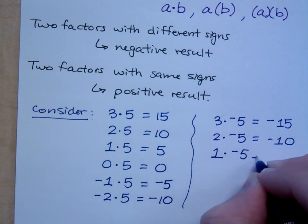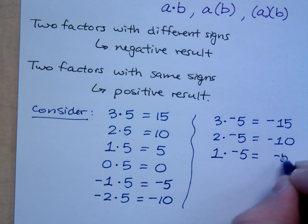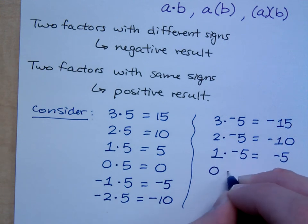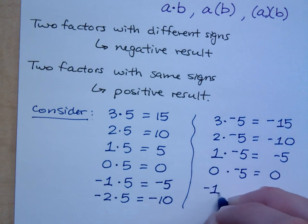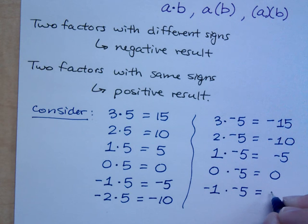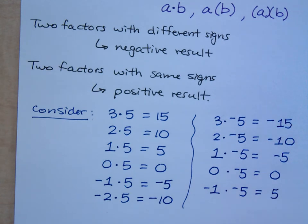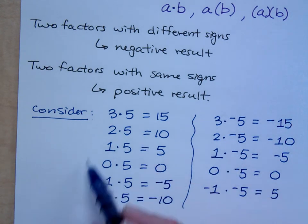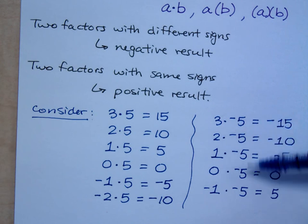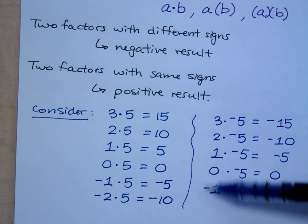One times negative five is negative five. Zero times negative five is zero. Negative one times negative five — do you see the pattern here? I'm decreasing these numbers by one, just like before, keeping the second factor the same. As I decrease by one, these guys are changing by the same amount. Three losses of five is negative fifteen; two losses of five is negative ten — it's not as big of a loss.